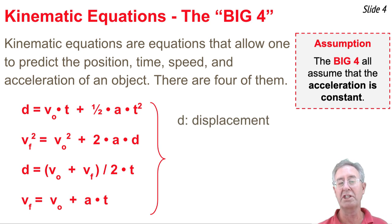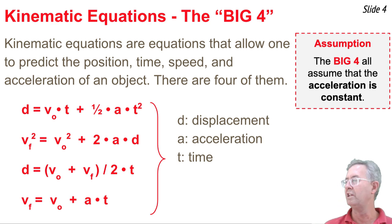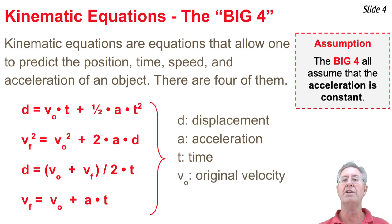D stands for the displacement of the object, the overall change in position. The acceleration is represented by the symbol a and the time is represented by the symbol t in these equations. Now you'll notice there's a few v's in these equations. There's a v with a little o after it and a v with a little f after it. These stand for velocities like v with an o after it stands for the original velocity and a v with an f after it stands for the final velocity. These are the four kinematic equations and they all assume one thing, that over the course of motion, the acceleration value that you see in these equations is constant.